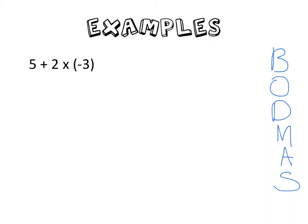5 plus 2 times brackets negative 3. Now that negative 3 is in brackets so we make sure that negative sign stays with it. So our first thing, do we have brackets? Yes, but there's already a number in it. Nothing actually needs to be solved within the brackets.